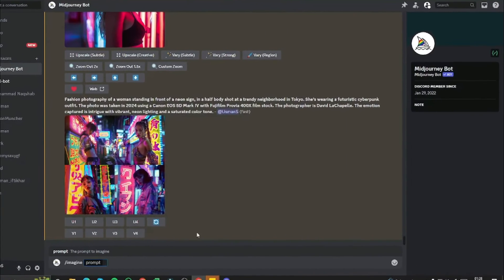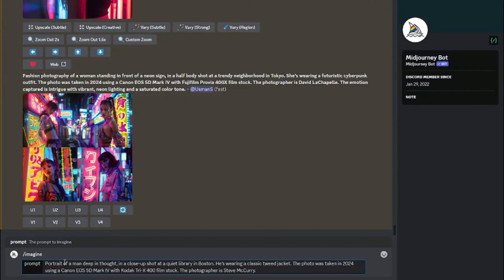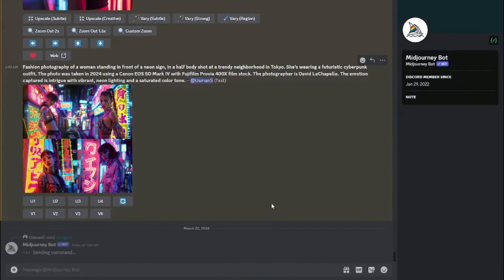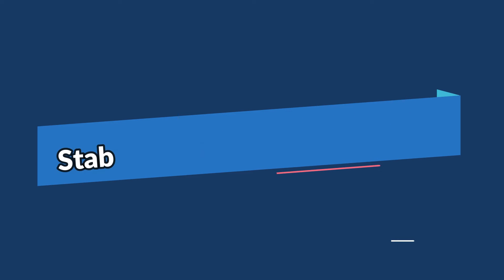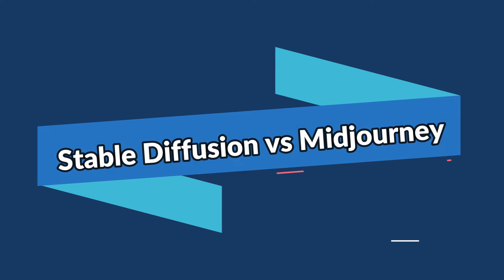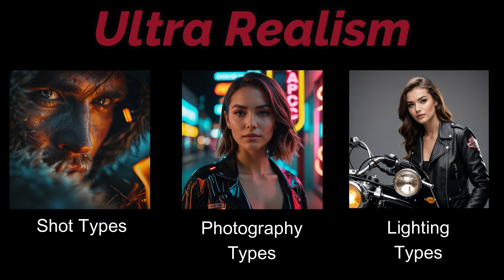MidJourney has a very intuitive interface — it just offers you the prompt box where you type /imagine and your prompt right away. Now let's start the comparison. We're going to compare ultra realism of humans in different scenarios: shot types, photography types, and lighting types.